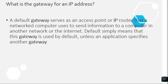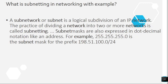Question 11: What is the gateway for an IP address? A default gateway serves as an access point or IP router that a networked computer uses to send information to a computer in another network or the internet. 'Default' simply means that this gateway is used by default unless an application specifies another gateway.